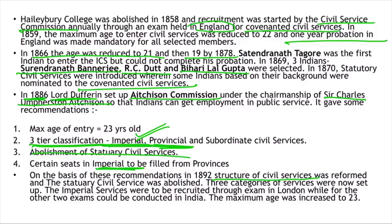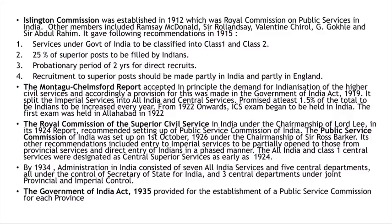These Aitchison Commission recommendations were finally accepted in 1892, reforming the structure of civil services. The three categories were introduced: imperial services with exams held in London, and other exams conducted in India. The maximum age was also increased to 23.